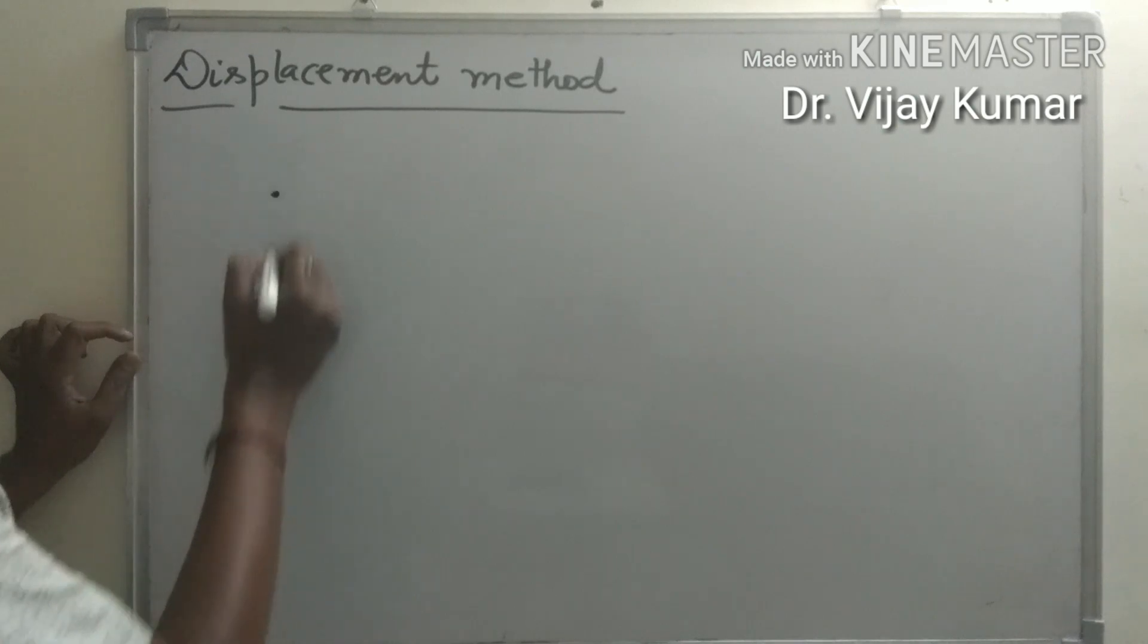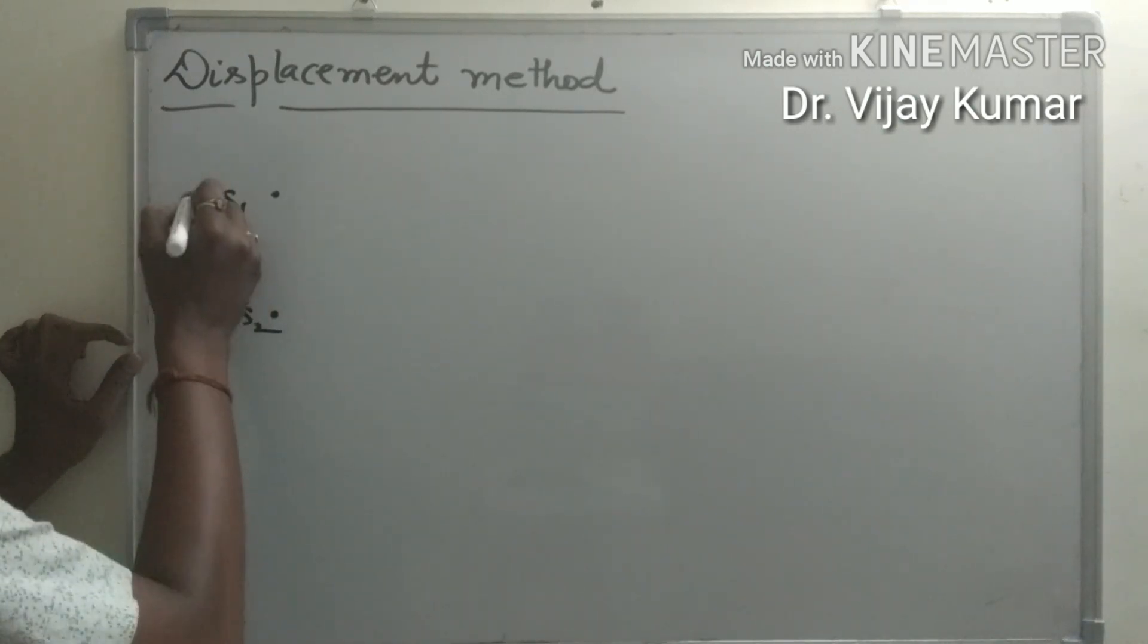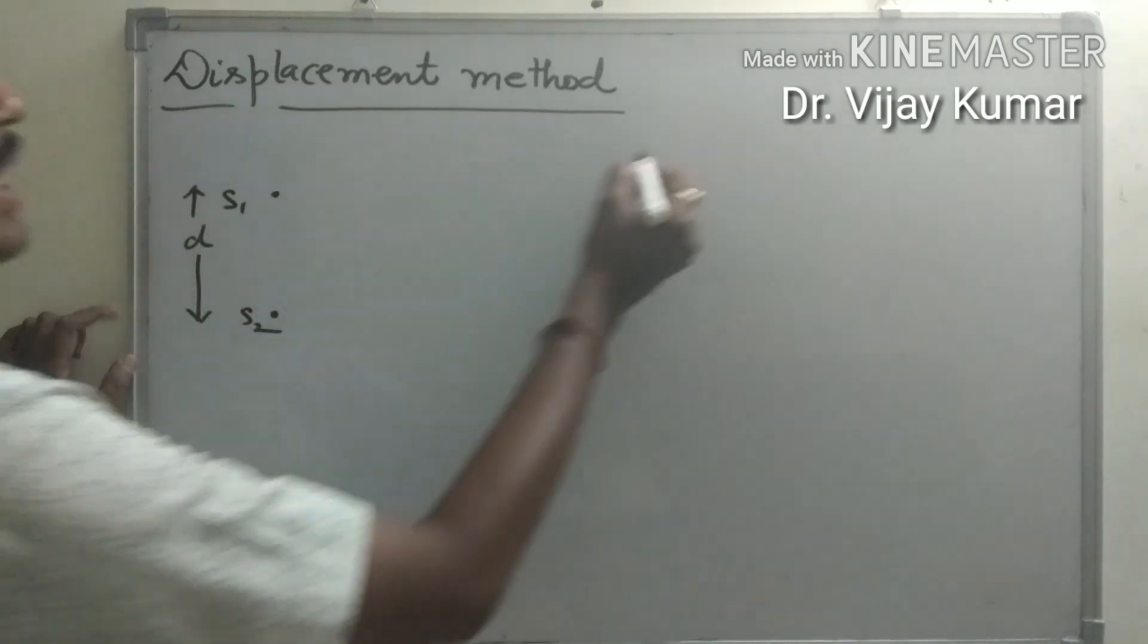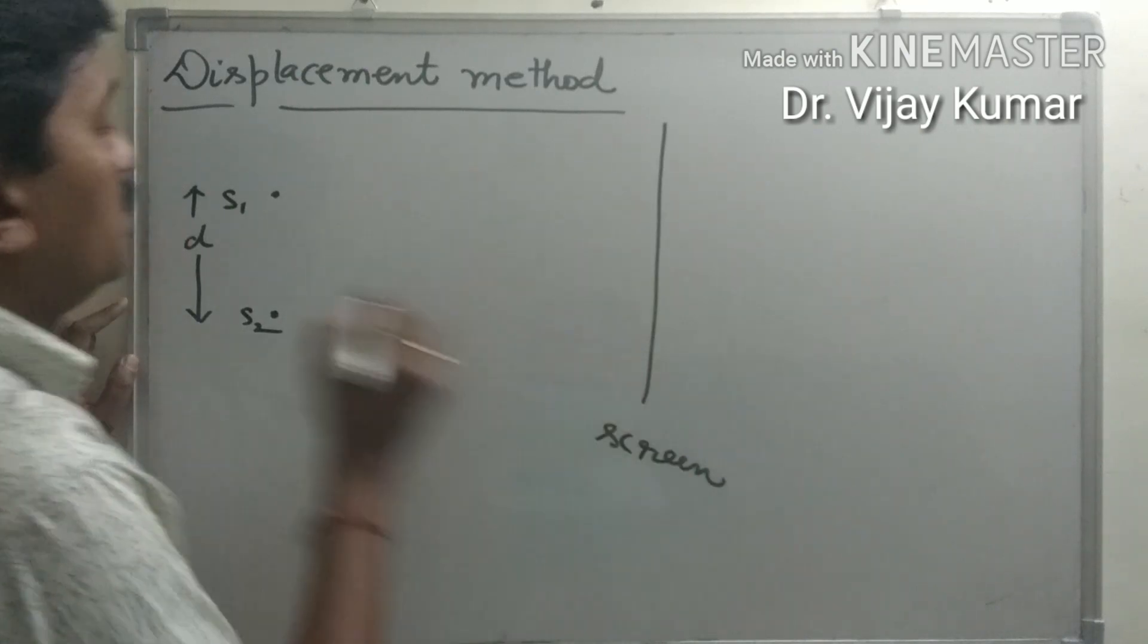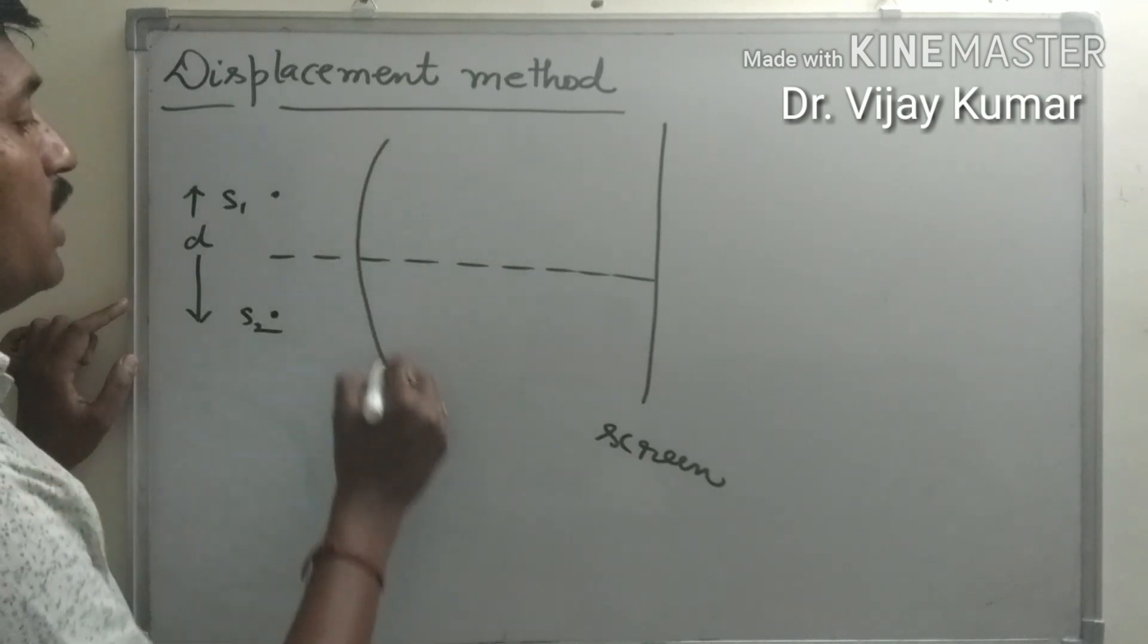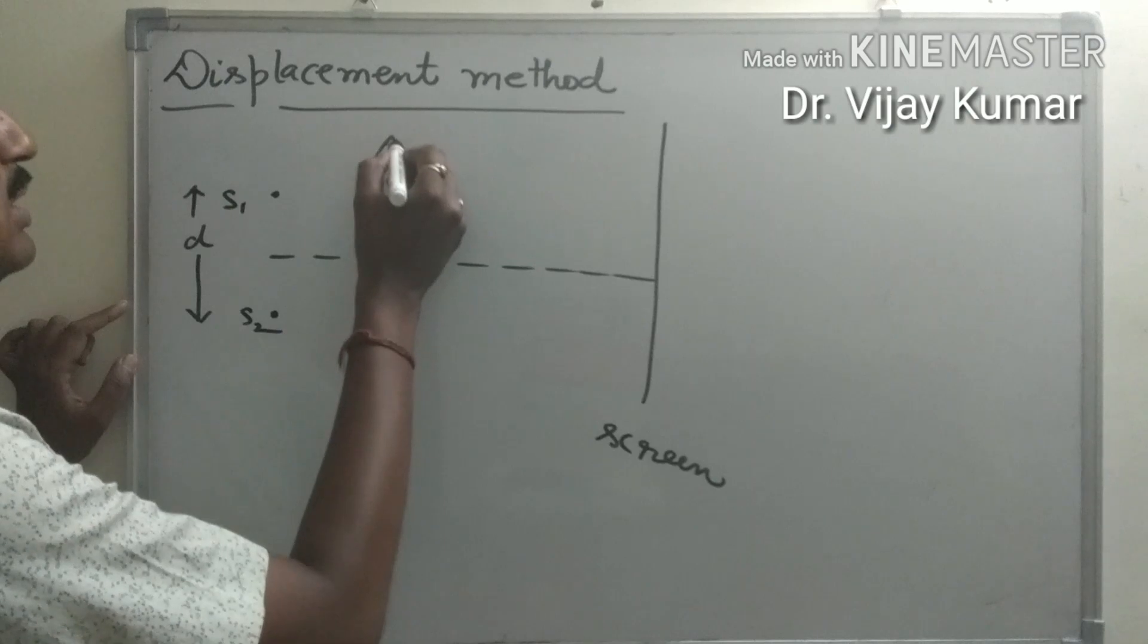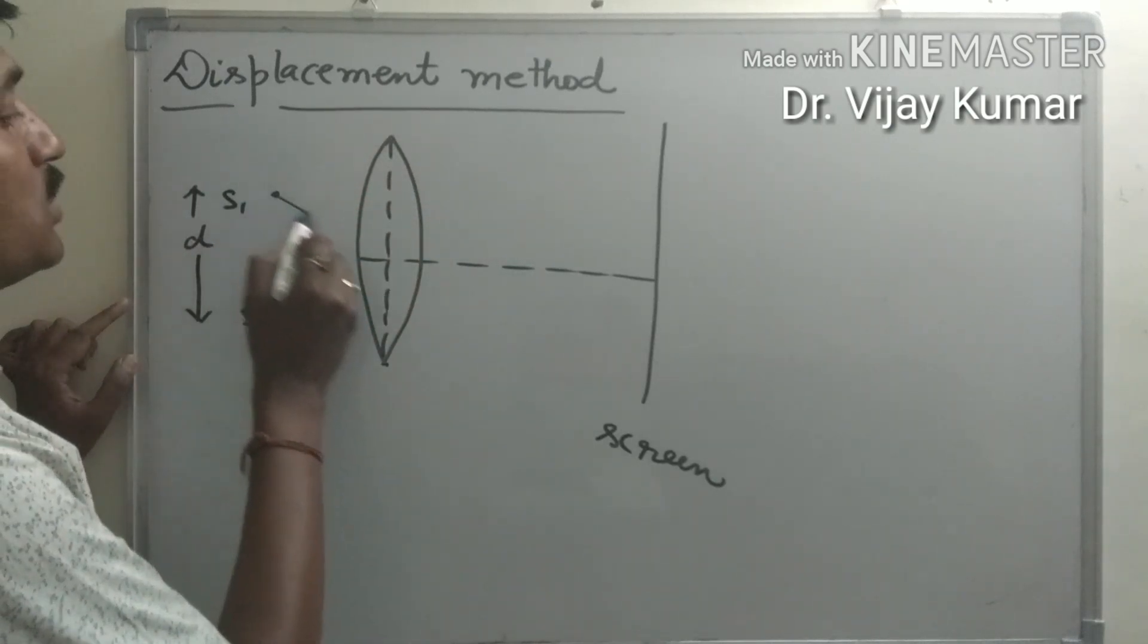Suppose these are two coherent sources S1 and S2. The separation between the two sources is small t, and this is the screen. We have to introduce a convex lens between the source and screen. One light ray from the first coherent source